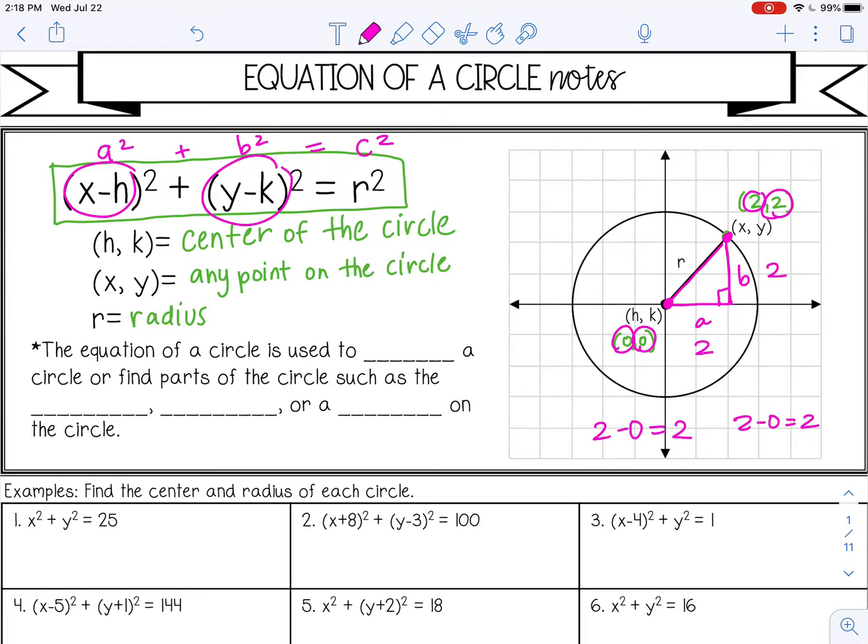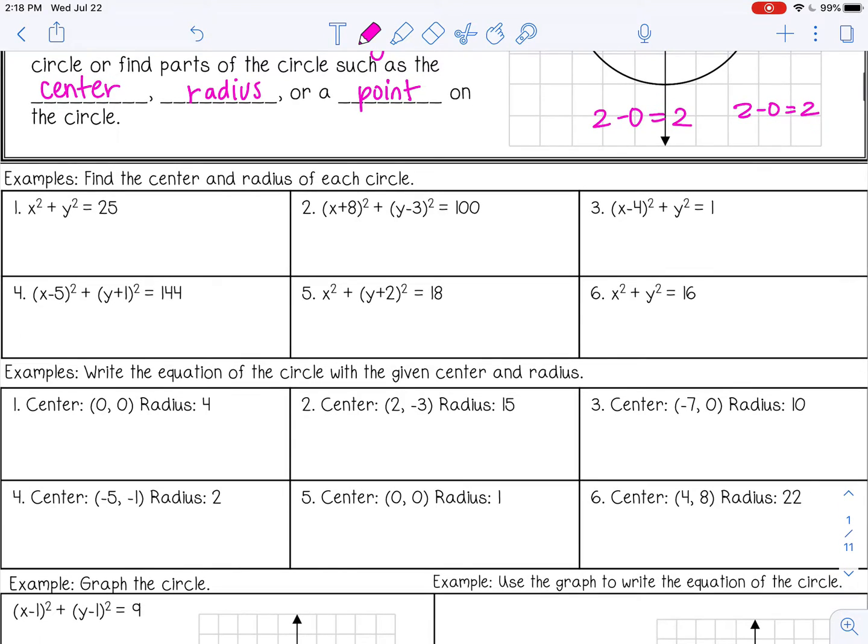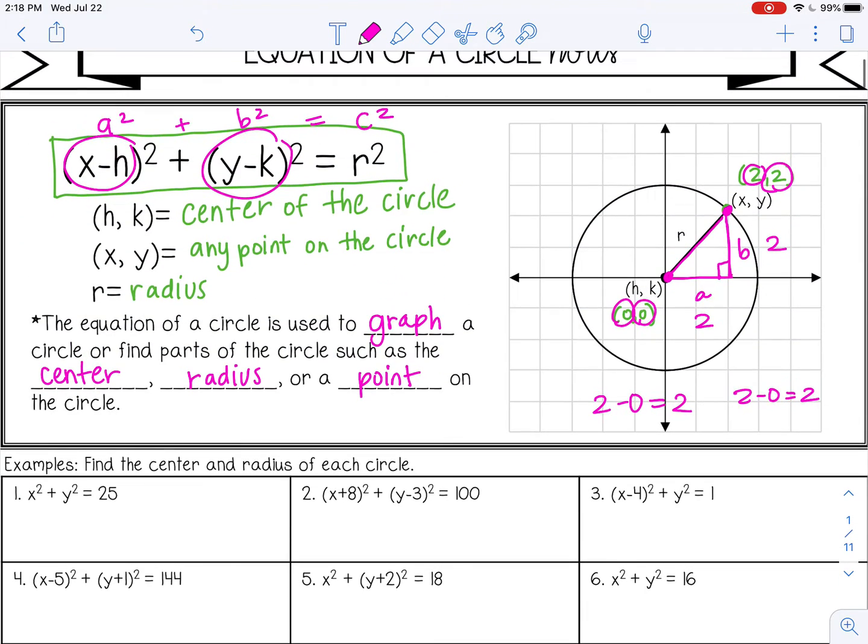So the equation of a circle is used to graph a circle, but you can also use it to find parts of the circle, such as the center, the radius, or a point on the circle. All right, so let's try some examples. So in the first set of examples, it says to find the center and the radius of each circle. Let me erase this just so we have our equation here.